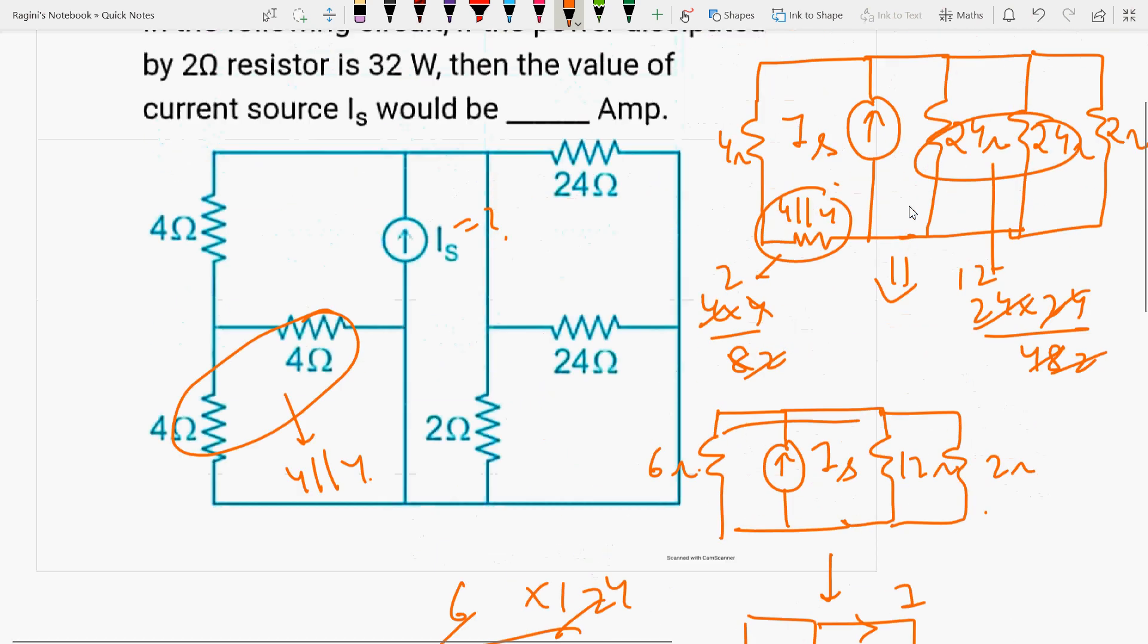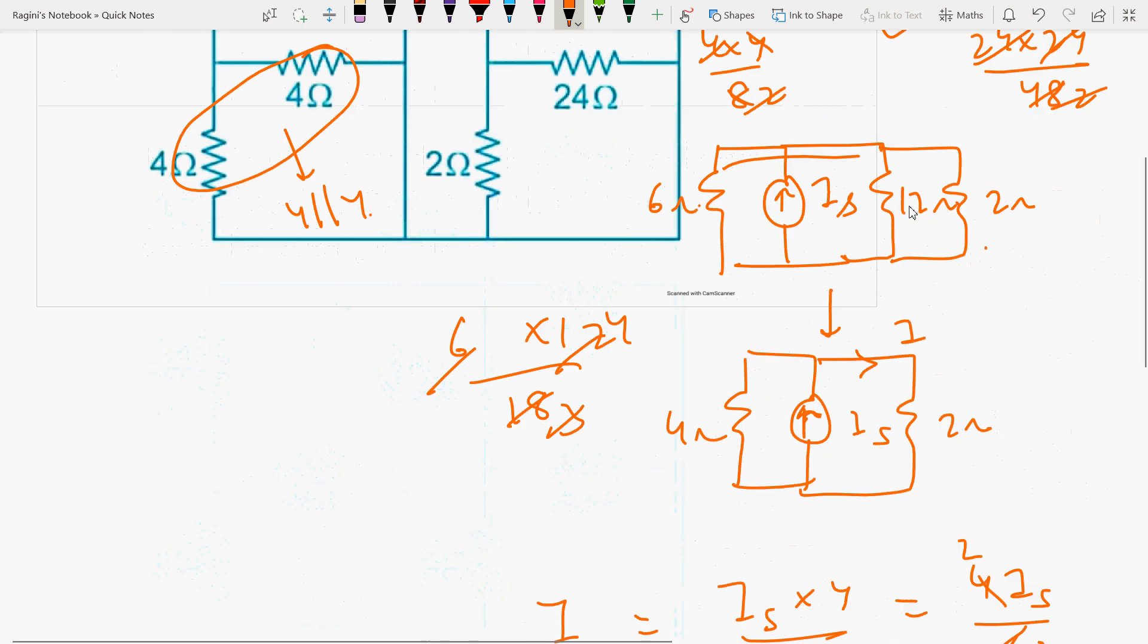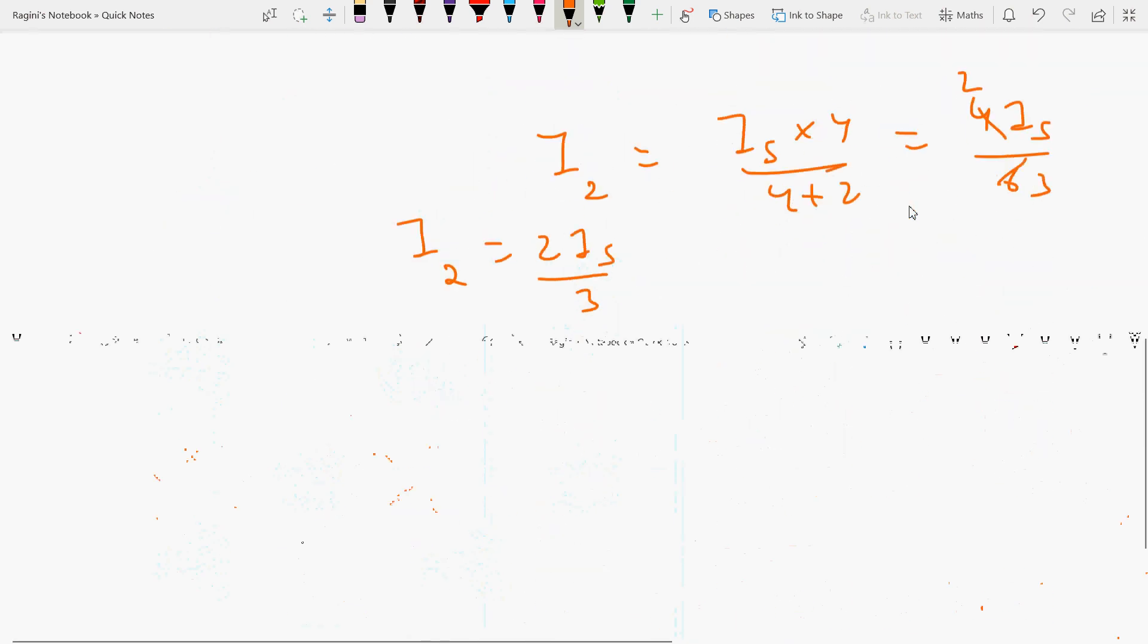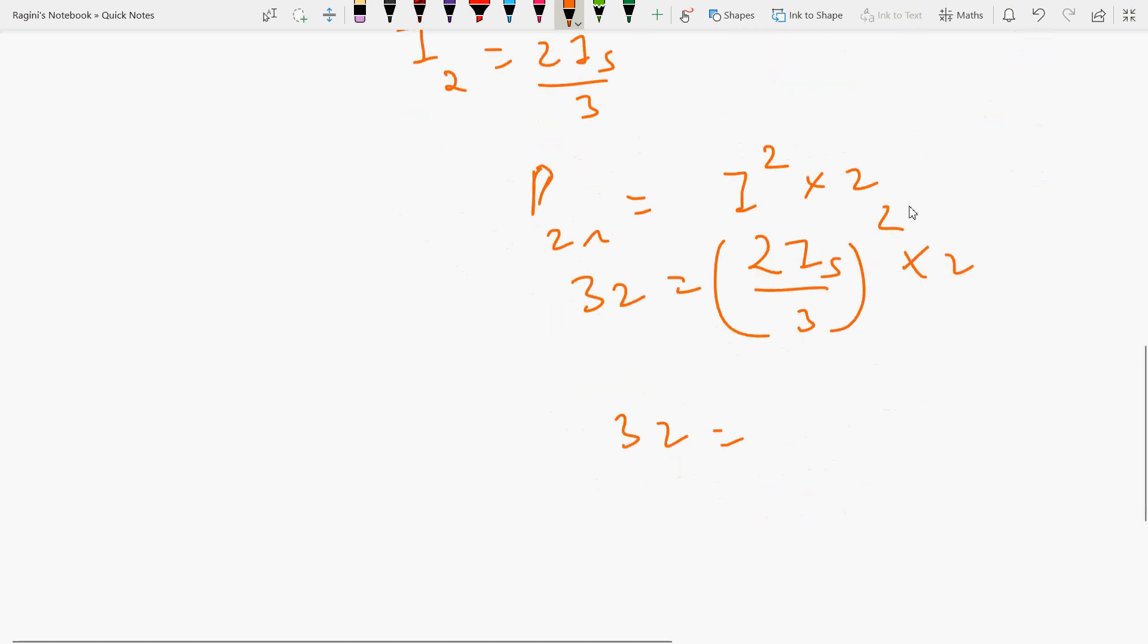Now it has said that power dissipated by the 2-ohm resistor is 32 watts. That means the power in the 2-ohm resistor will be i2 squared into 2. So 32 equals 2 Is by 3 squared into 2. How much is this value? 32 equals 4 Is squared upon 9 into 2. Now you can solve this.